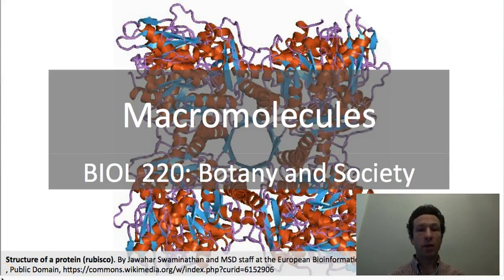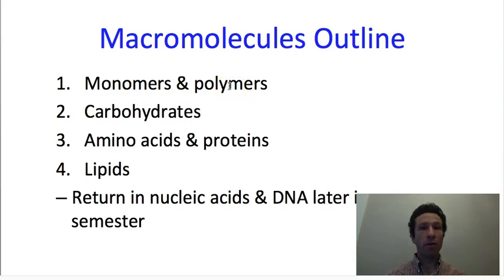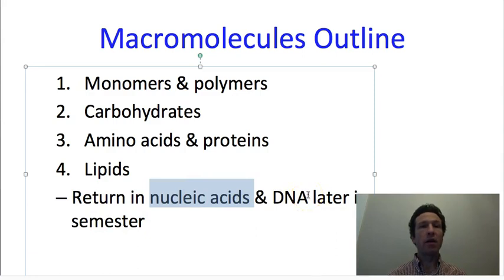In today's lecture, we are going to talk about macromolecules. We will start by reminding you what macromolecules are — we talked about that in the previous lecture. We will then talk about monomers and how they can be combined together to make polymers. We will then talk about amino acids, which combine together to form polypeptides or proteins, and finally lipids. These are three of the four categories of macromolecules. The fourth category is nucleic acids, which is what DNA is made out of. We will return and talk about nucleic acids later in the semester.